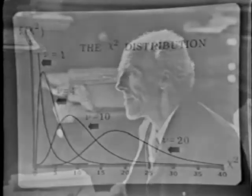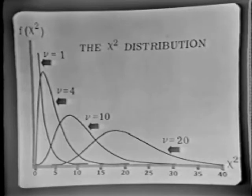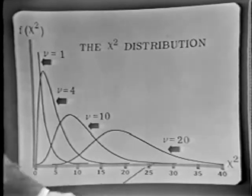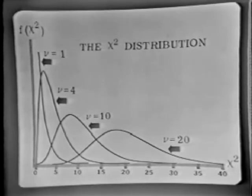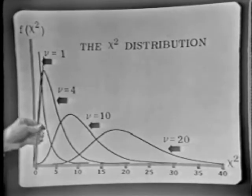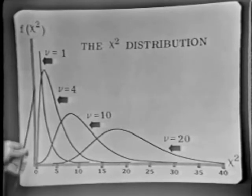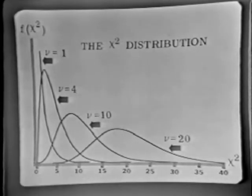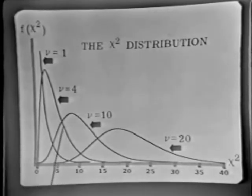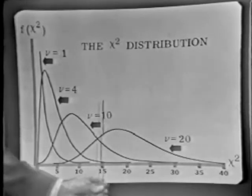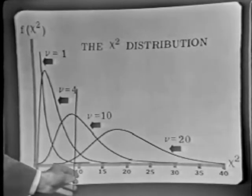Let's look at some chi-square distributions. Here's a whole collection of chi-square distributions on the chart. The chi-square distribution is constrained to start at zero and can go all the way up to plus infinity. There's a different chi-square distribution for every value of nu. Here's chi-square when nu equals 1, when nu equals 4, nu equals 10, and nu equals 20. An interesting characteristic is the mean: the distribution for nu equal to 20 would balance at 20, and the mean of the nu equals 10 distribution is 10.